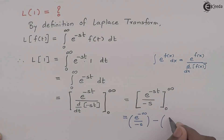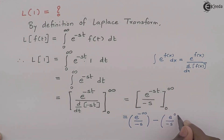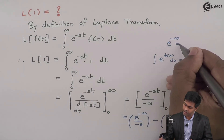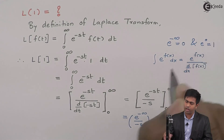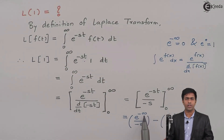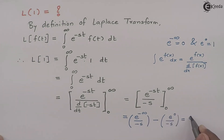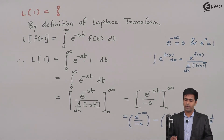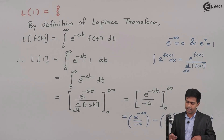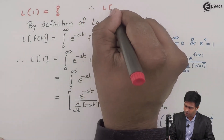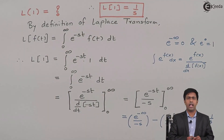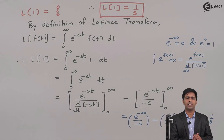Substituting the lower limit 0, we get e raised to 0 upon minus s. We know that e raised to minus infinity equals 0 and e raised to 0 equals 1. So the first term becomes 0, and minus minus becomes plus, giving us 1 upon s. Therefore, the Laplace transform of 1 is equal to 1 upon s. This is the value we derived from the definition of Laplace transform.